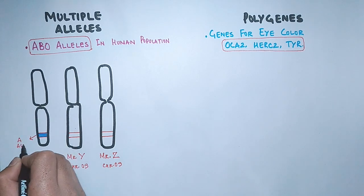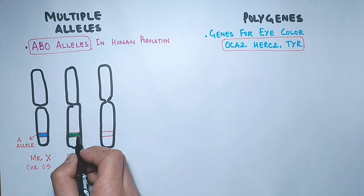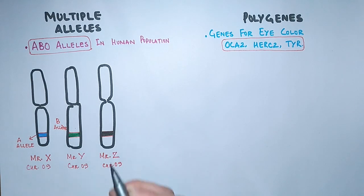We see Mr. X has got A allele on its Q arm. Mr. Y has got B allele, whereas Mr. Z has got O allele. And these alleles are present at the same position, that's same loci on Q arm.